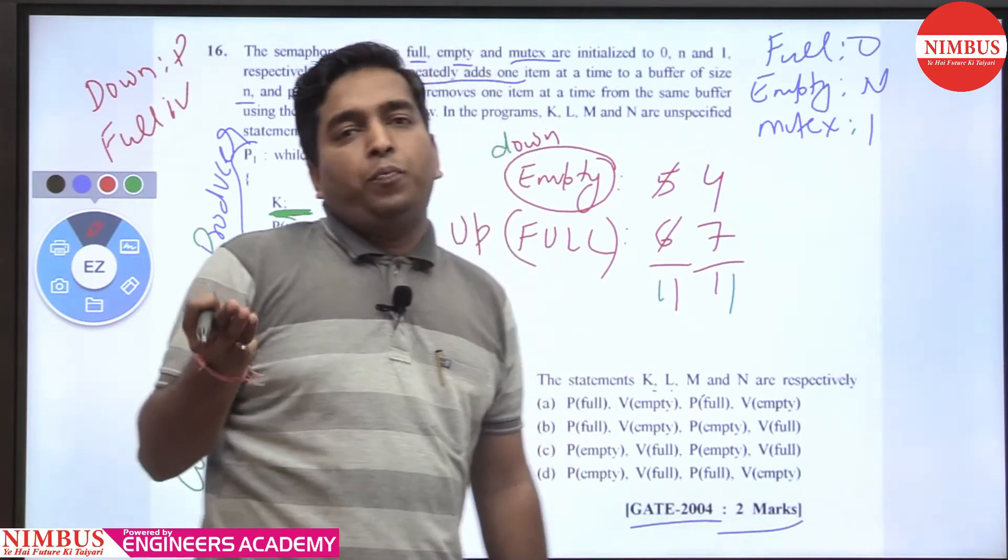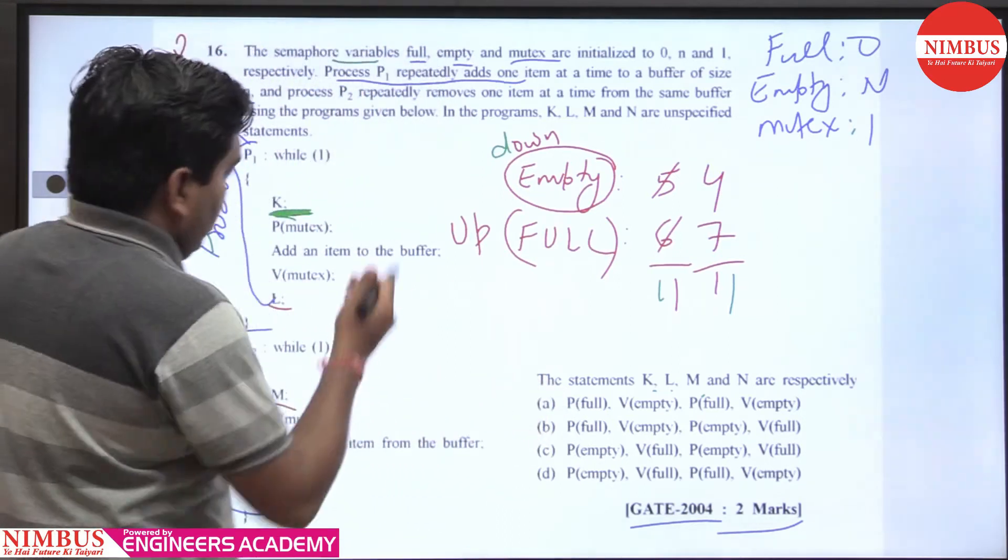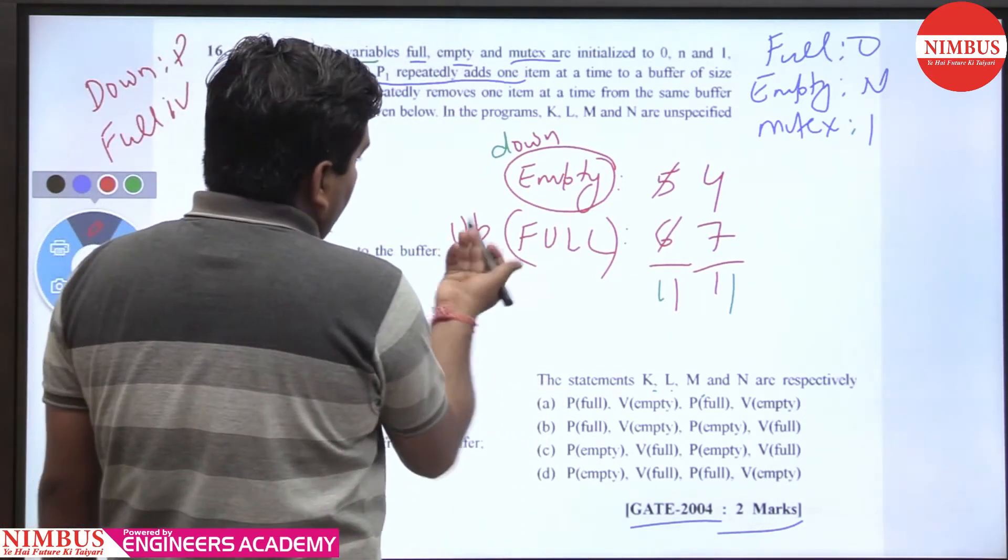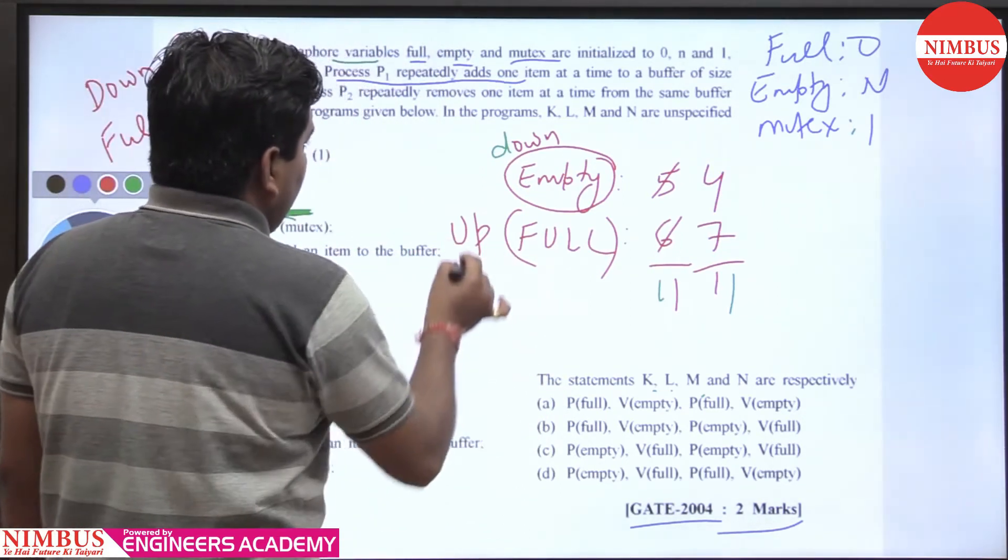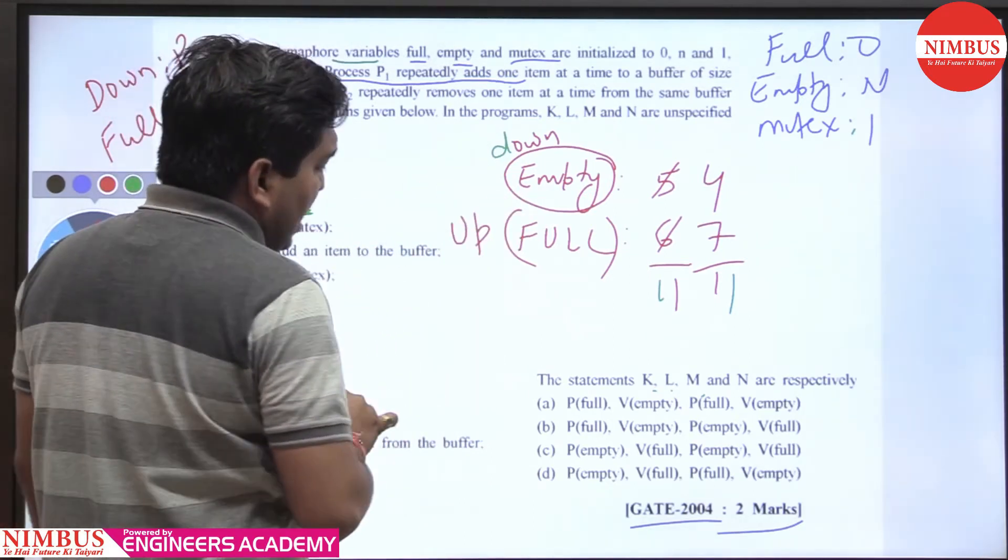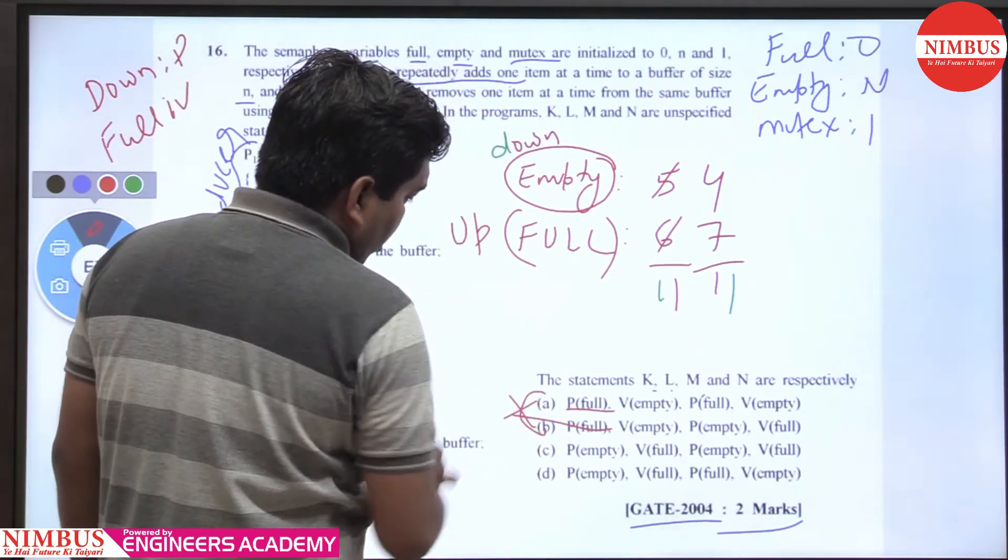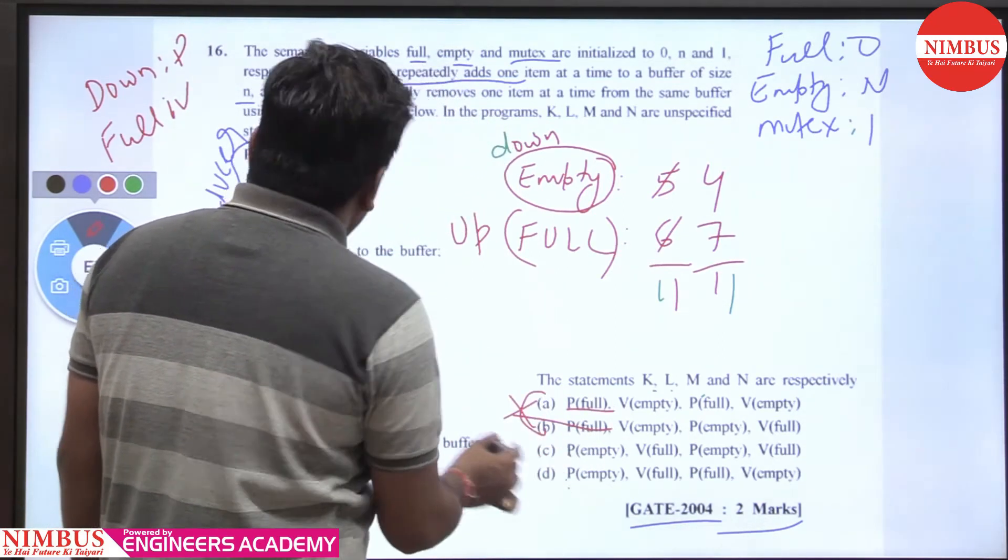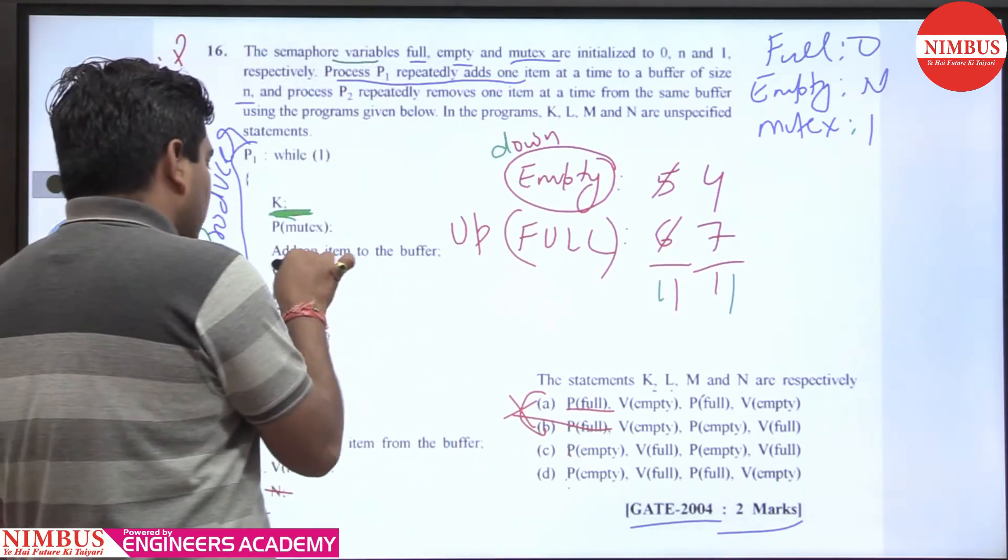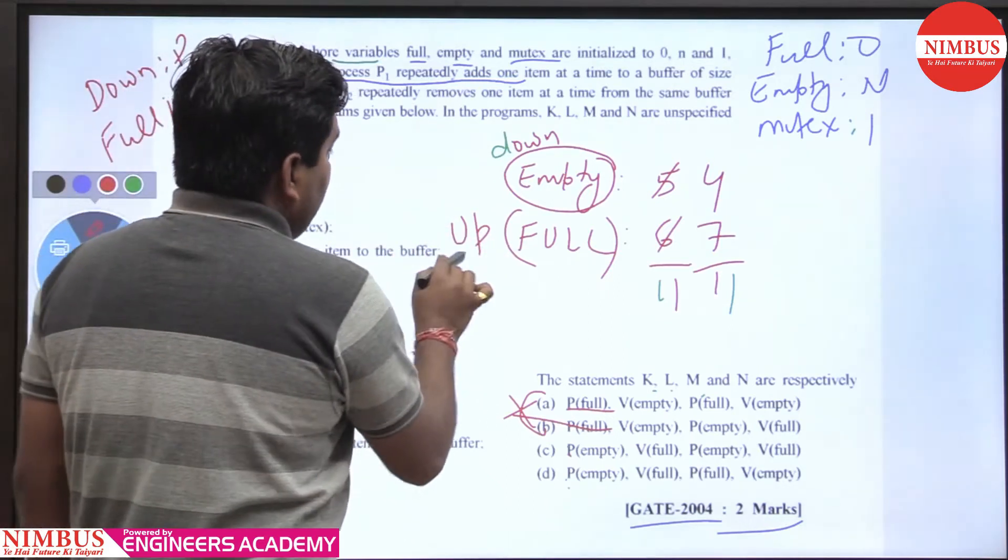Down means P, and we can also call it wait. P and V are based on Latin words - up or signal is V. So at K, the producer does P(empty), which is correct in option D. After the item is stored in the buffer, we increase full with V(full). Both options B and D have V(full).